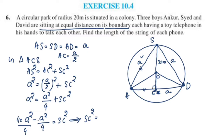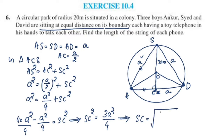4a² minus a² is 3a² by 4. SC² equals 3a² by 4. SC is equal to root of 3a² by 4, which gives SC equals √3·a / 2.